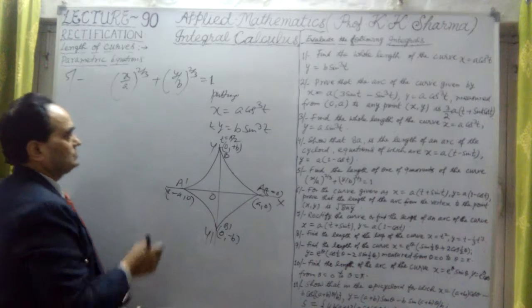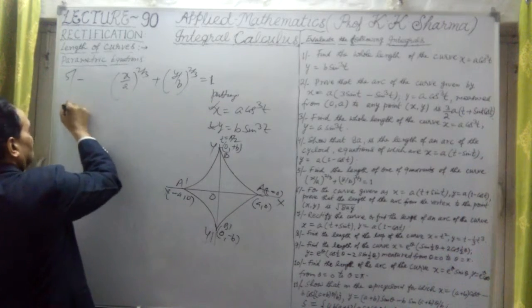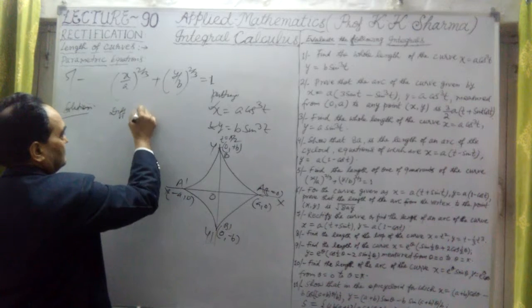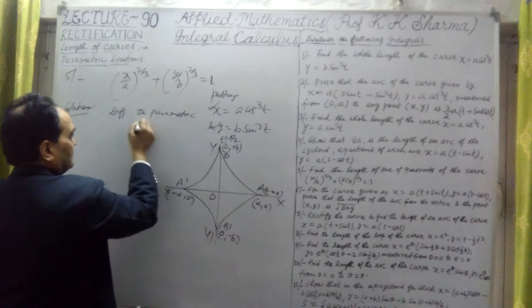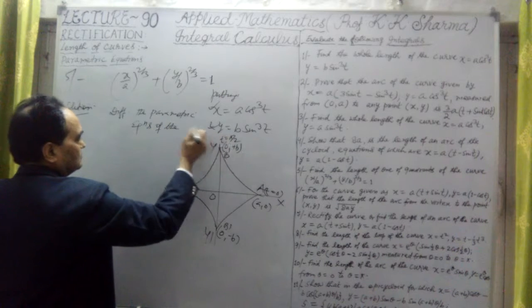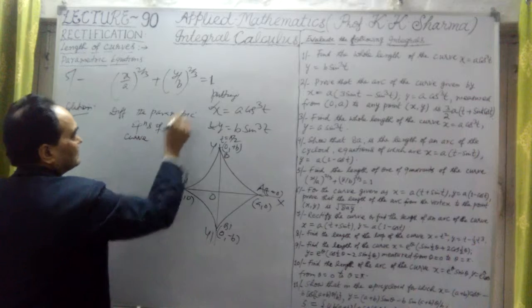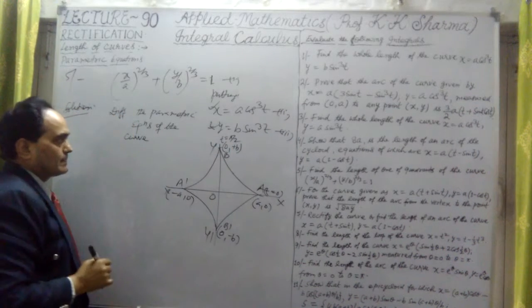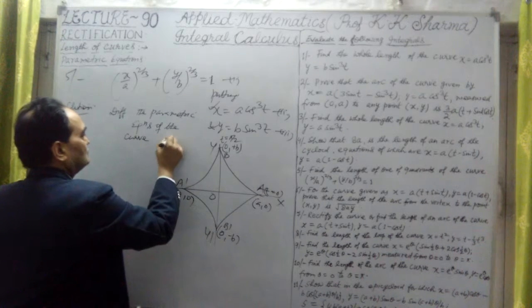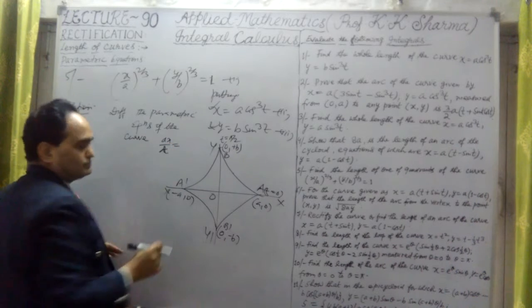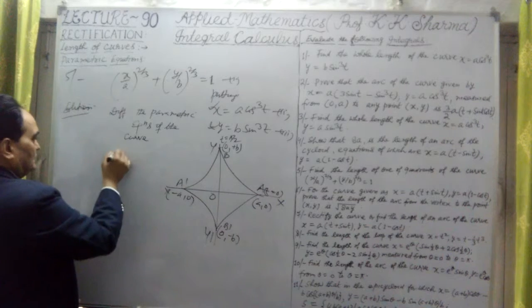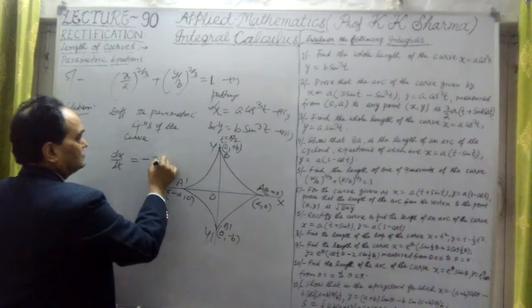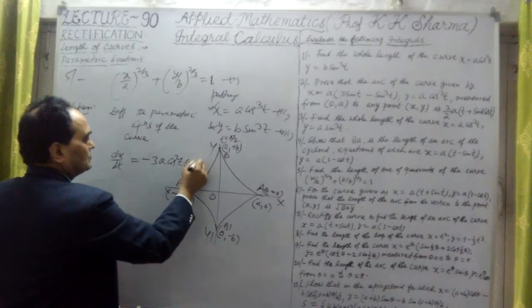Finding dx/dt: differentiating the parametric equations, x = a cos³t and y = b sin³t, with respect to t. So dx/dt = -3a cos²t sin t. This is the solution for question number 5, differentiating to find the arc length formula for one quadrant of the curve.